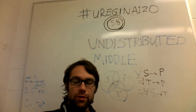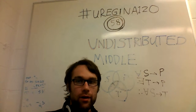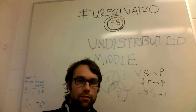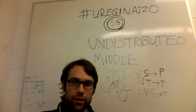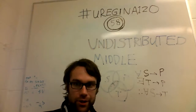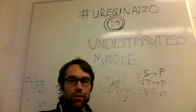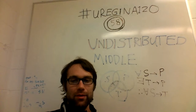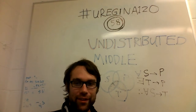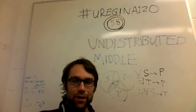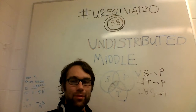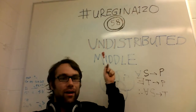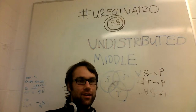Welcome back to URegina 120. I'm Jeff Cliff and this is a series of 120 videos of things that I learned at the University of Regina. Today we're going to be talking about another logical fallacy — the undistributed middle fallacy.